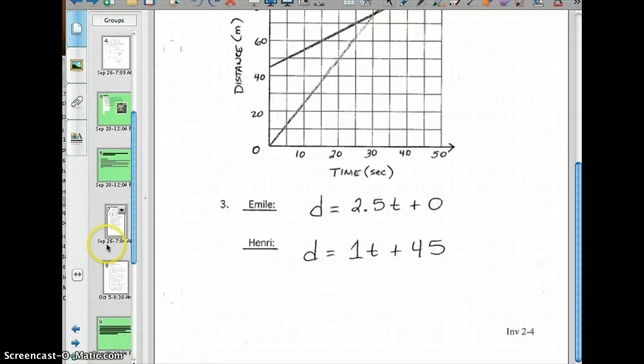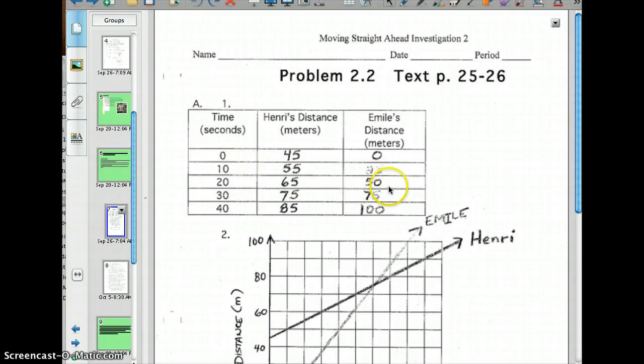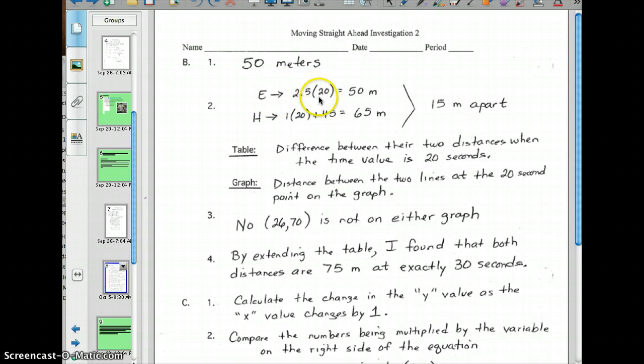All right, we're moving on to B now. Question B asks, how far does Emil walk in 20 seconds? Well, we can use our table and look and see, if you go back to the table, where he is at 20 seconds and he's at 50 meters. We can also plug in 20 seconds in front of that equation that we wrote, which tells us to take 2.5 times his time in order to get the distance. And guess what we get? It's 50.